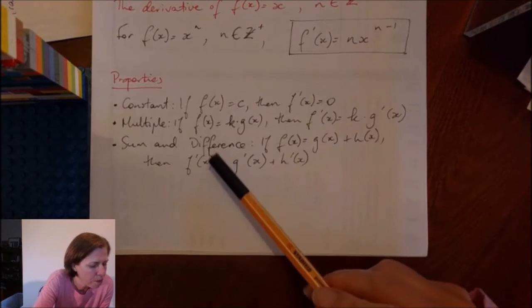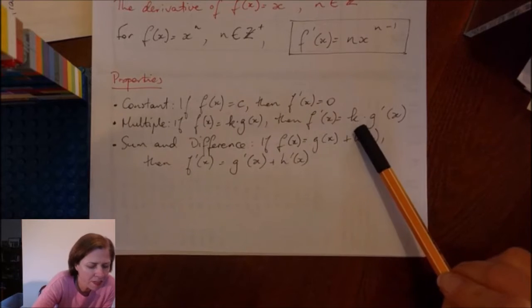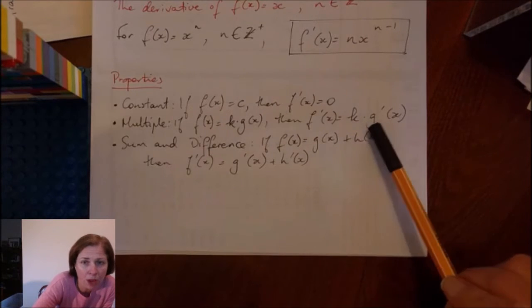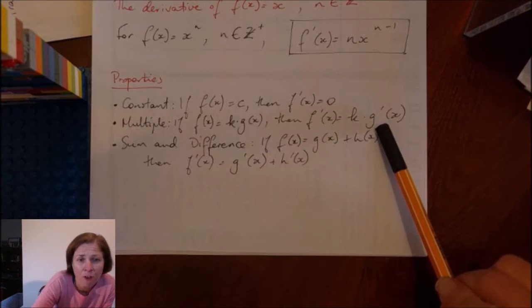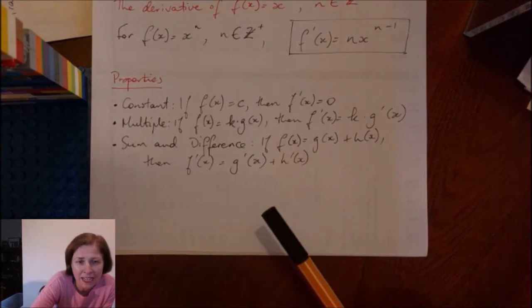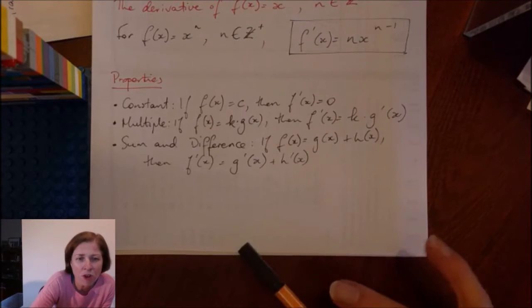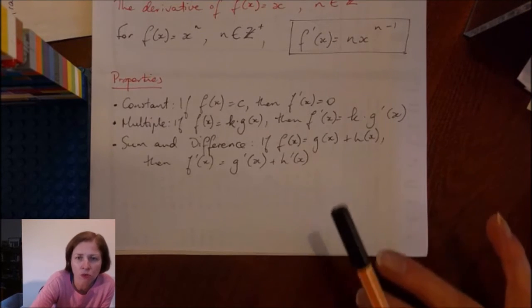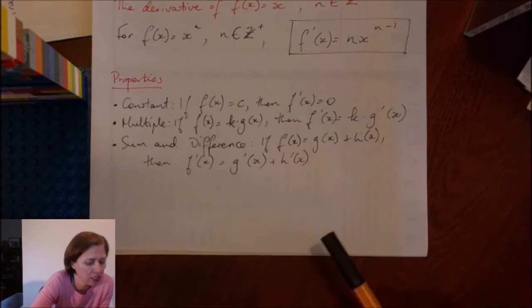If I've got a multiple such as k times g(x), then when I find the derivative, that k is multiplied by the derivative. So for example, if I'm finding the derivative of x squared, it's going to be 2x. If I find the derivative of 3x squared, it's going to be 3 times the derivative of x squared. So 3 times 2x, which is 6x.